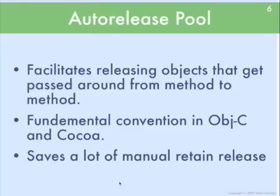There's another mechanism called the auto-release pool. The auto-release pool is the piece where memory management happens automatically. It facilitates releasing objects that get passed around from method to method. Because most objects have a lifetime of more than just one method, pretty much every object goes through the auto-release pool. The auto-release pool is a fundamental convention in Objective-C and Cocoa, and it saves a lot of manual calls to retain and release.